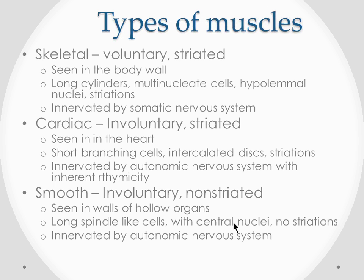The first topic is the types of muscle fibers. Skeletal muscle, broadly classified, is voluntary and striated. It's seen in the body wall - all your muscles of your limbs, on the outer surface of your body, muscles in the thorax, the lower limb, and then you have the diaphragm, which is a thoracic diaphragm. You also have a pelvic diaphragm. So some skeletal muscles are present inside the body cavity, but most are outside in the body wall.